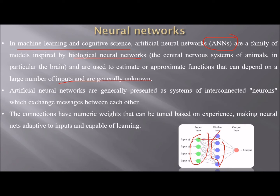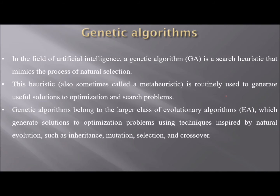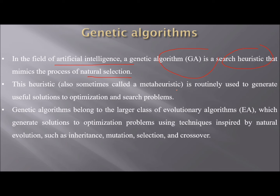The connections have numeric weights that can be tuned based on experience, making neural networks adaptive and capable of learning. In the field of AI, a genetic algorithm (GA) is a search heuristic that mimics the process of natural selection. This meta-heuristic is routinely used to generate useful solutions to optimization and search problems.